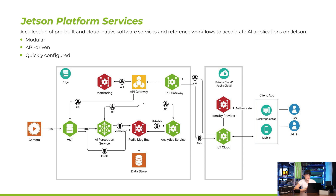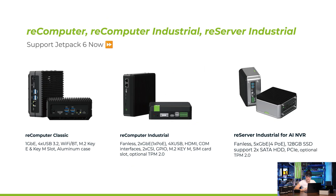Jetson Platform Service is a new feature collection announced together with JetPack 6, providing more than 15 services for AI developers to build end-to-end AI solutions. In this diagram, all services are wrapped as blocks and can be used via provided APIs. It is a collection of pre-built, cloud-native software services and reference workflows to accelerate AI applications on Jetson — modular, API-driven, and quickly configured.